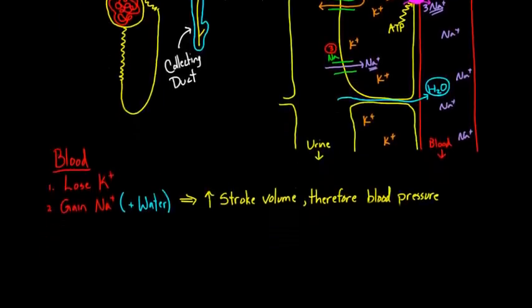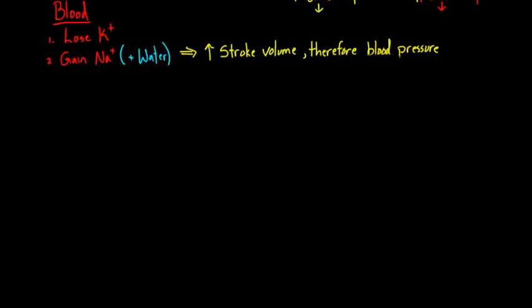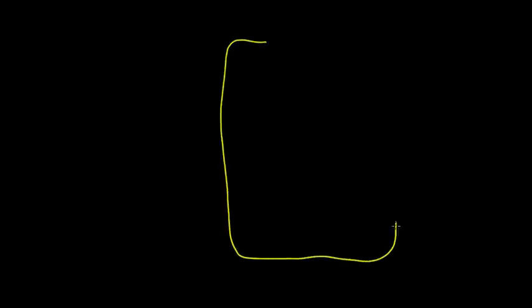Aldosterone actually works on one other type of cell and has an important job there as well. That is the alpha intercalated cell. The main job of the alpha intercalated cell is to get rid of protons.